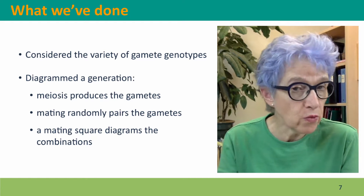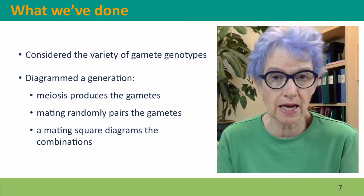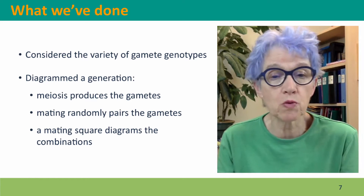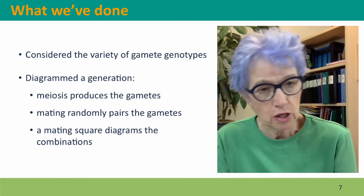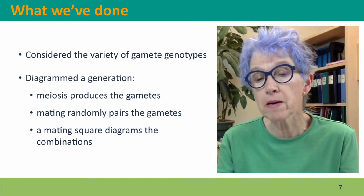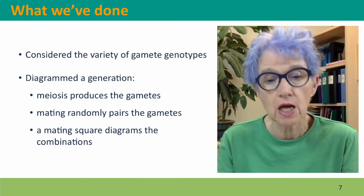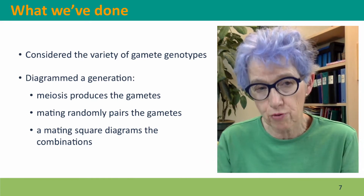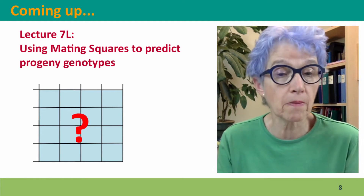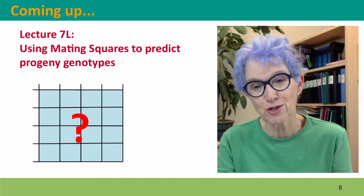So we've considered the variety of gamete genotypes — it's literally astronomical. And we've diagrammed one generation so that we can think about how meiosis produces the gametes, and then a mating square lets us visualize the pairing of gametes that produces the progeny genotypes. Coming up next, we'll talk about how to use the mating square to do this. I hope to see you there.